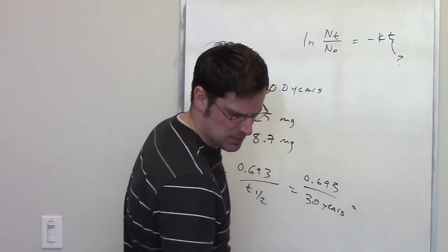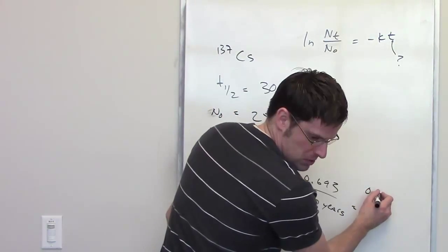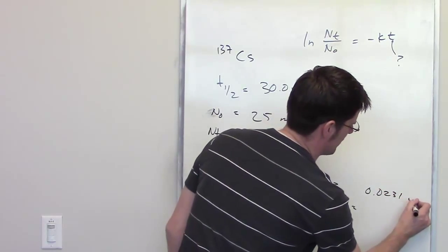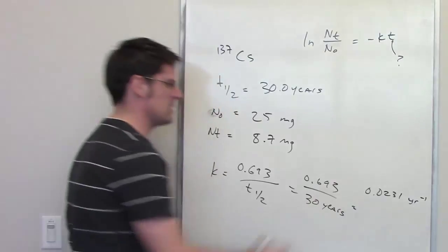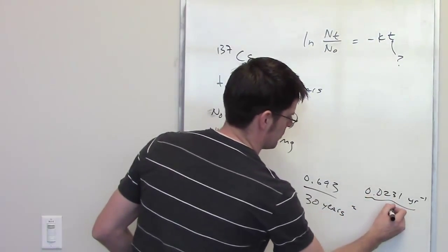So the final answer to that ends up coming out to be 0.0231 per year. So inverse years, that's the units for k. So this is k. Let's all write down k.